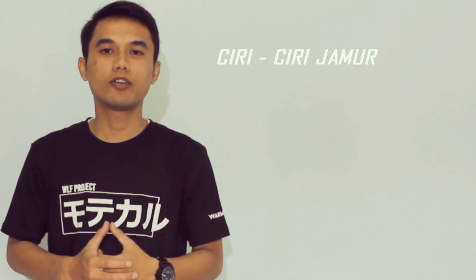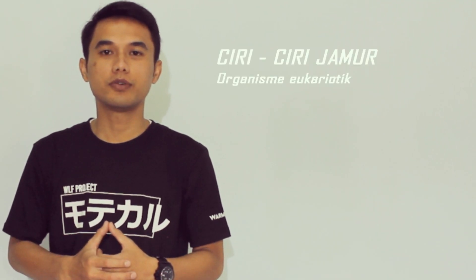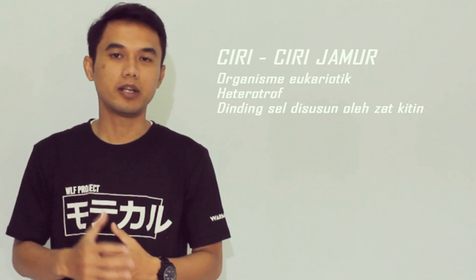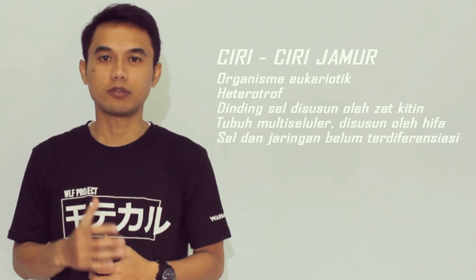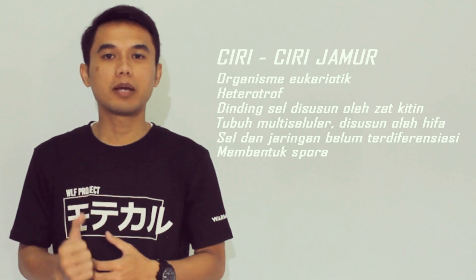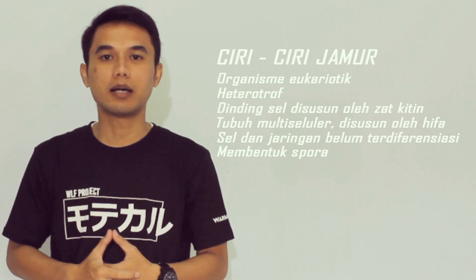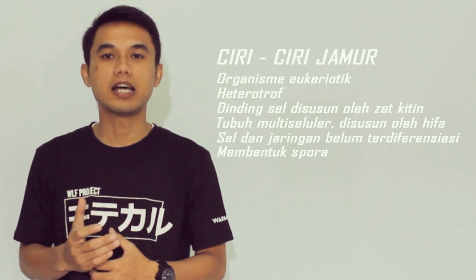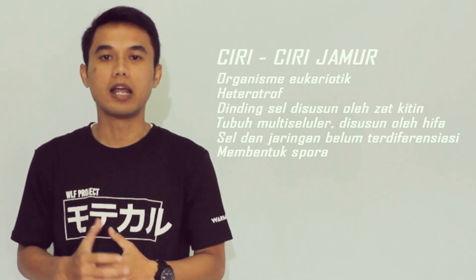Soal nomor 3 adalah tentang Fungi atau Jamur. Jamur merupakan organisme eukaryotik. Jamur juga tidak memiliki klorofil, sehingga dimasukkan ke dalam kelompok organisme heterotrop. Untuk mendapatkan nutrisi, jamur akan menyerap nutrisinya dari lingkungan, dan kebanyakan jamur adalah organisme saprofit. Biasanya jamur dikelompokkan berdasarkan tipe spora dan tipe badan buahnya.